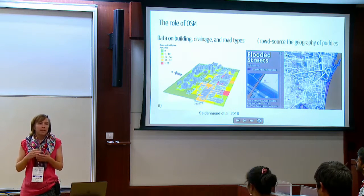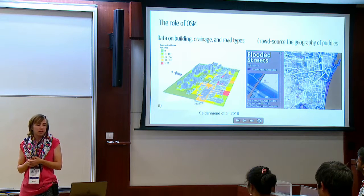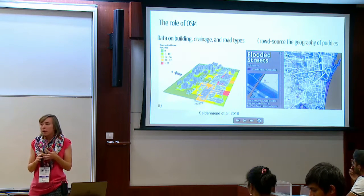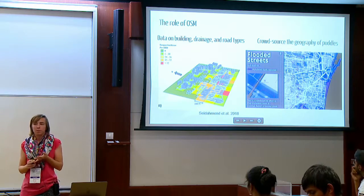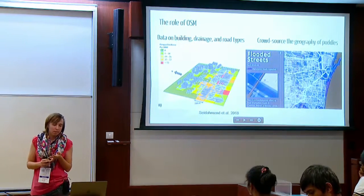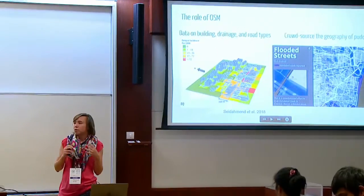We use OpenStreetMap and crowdsourced data, as well as community mapping methods, to address these two problems. OpenStreetMap can provide data we might not get from remotely-sensed sources — things like building height, highway materials, or drainage systems. We can also use crowdsourced data, similar to the interactive flood mapping used during floods in South India, to get people's input on what they're seeing around them. Similarly, we want to know where water is on a very small scale — what we call the geography of puddles.